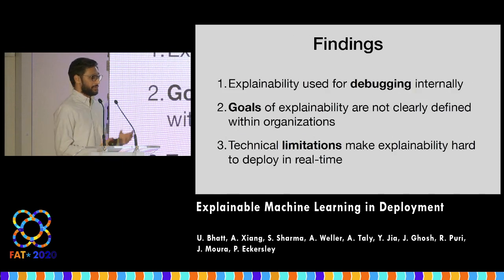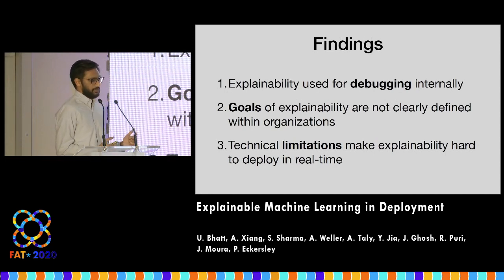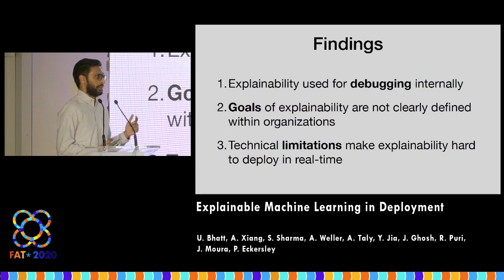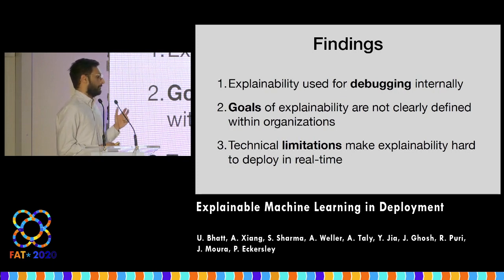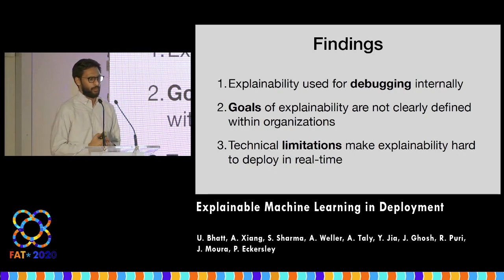Our findings were threefold. We found that explainability is primarily used for internal debugging, the goals of explainability are not clearly defined within organizations, and there are inherent technical limitations to the current explainability work done by our communities and in the broader ML world.